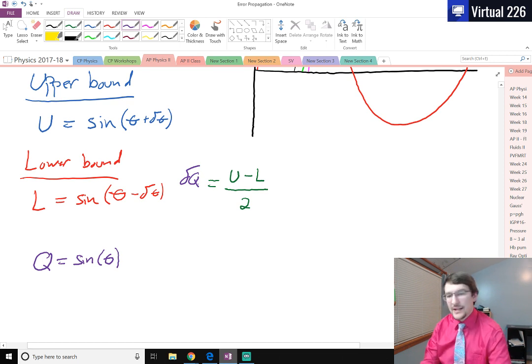So q for sine, that's the value ranging from negative one to one. The del q to that, the upper minus lower divided by two, that tells us what's the deviation of that answer we got. So that's how we can look at a function.